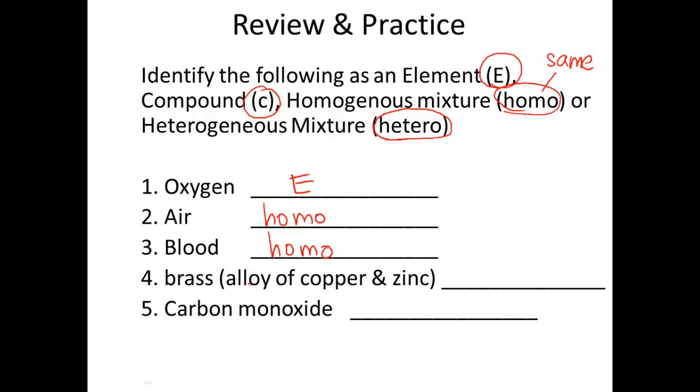Brass. It is an alloy, meaning a blend of these two metals, copper and zinc. Can you separate those easily? Not really. They're melted together. So it is also a homogenous mixture. Lots of homogenous mixtures. In fact, mixtures are probably more abundant than elements and compounds.